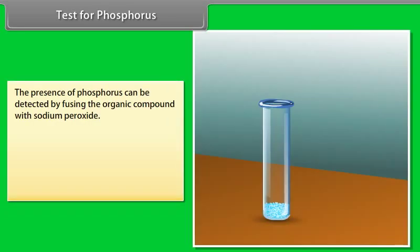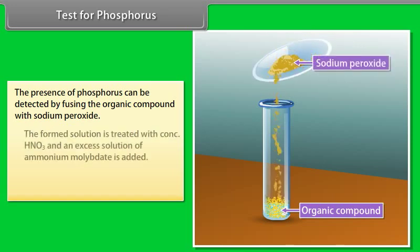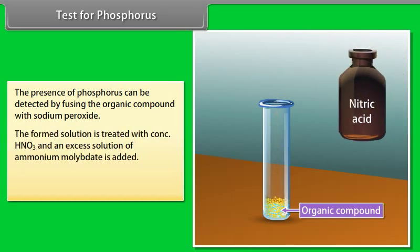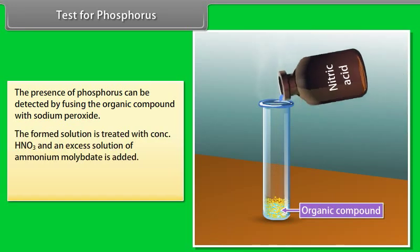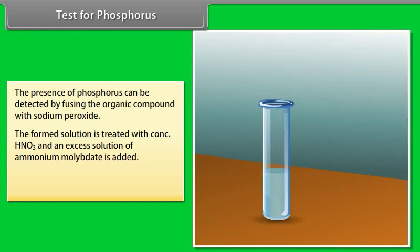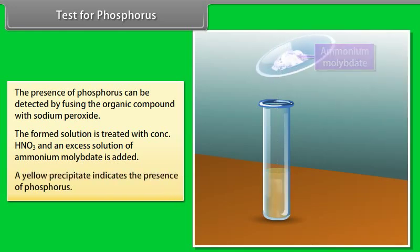Test for phosphorus: the presence of phosphorus is detected by fusing the organic compound with sodium peroxide. The formed solution is treated with concentrated HNO₃, and an excess solution of ammonium molybdate is added. A yellow precipitate indicates the presence of phosphorus.